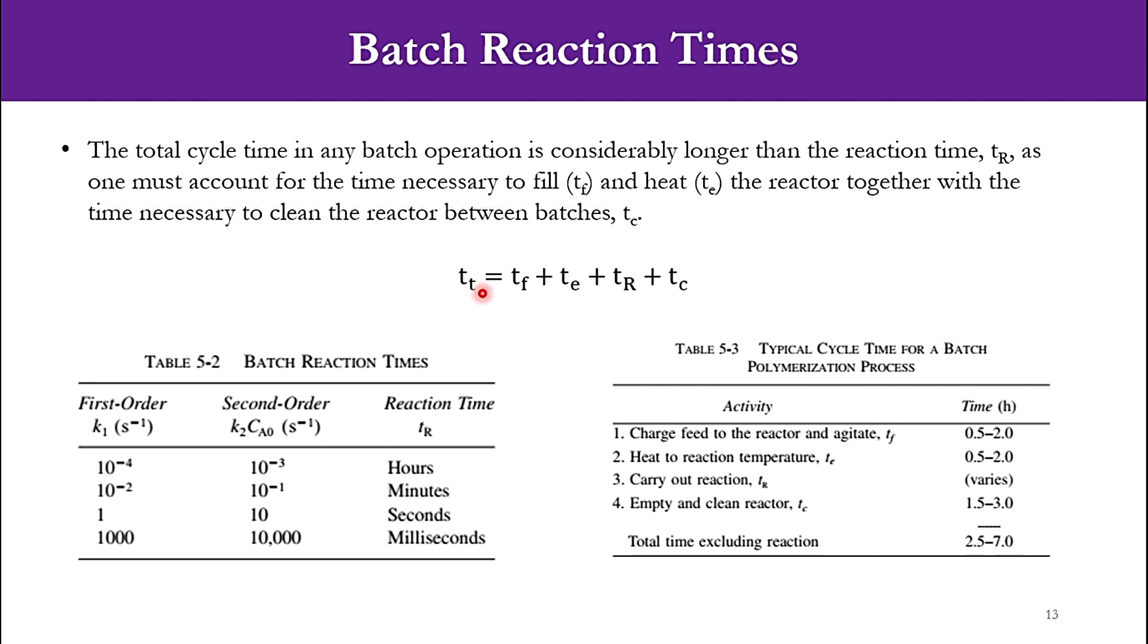These all times combine to form one total batch cycle time. In the book there are different reaction times given for the system: for charging feed to the reactor and agitate, TF is between 0.5 to 2 hours; heat to reaction temperature, TE is 0.5 to 2 hours; carry out reaction varies from system to system; and empty and clean reactor, TC is 1.5 to 3 hours.